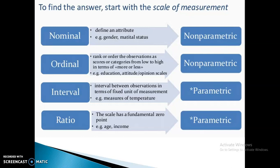If your data is nominal, for example gender or marital status which is defining the attribute, we can go for a non-parametric test because here we are not finding the mean. We cannot find out the mean marital status or mean gender. We can only talk about the modal values, so this is non-parametric test.